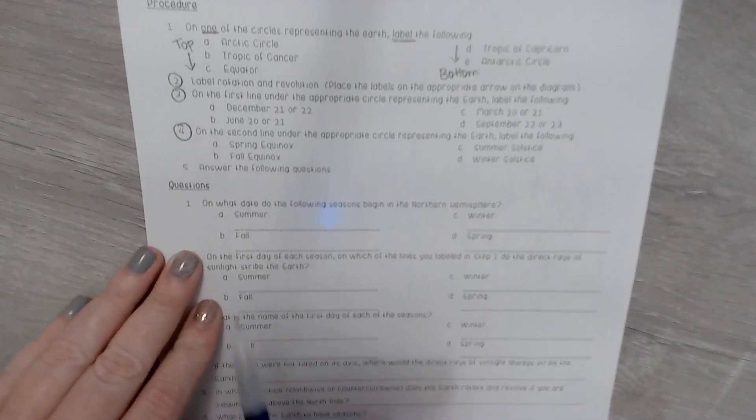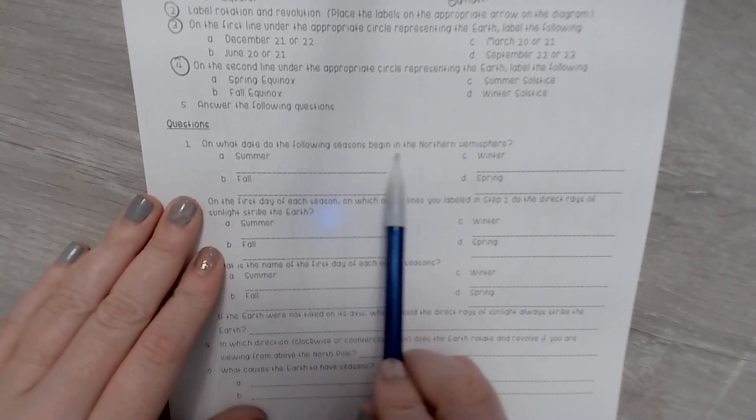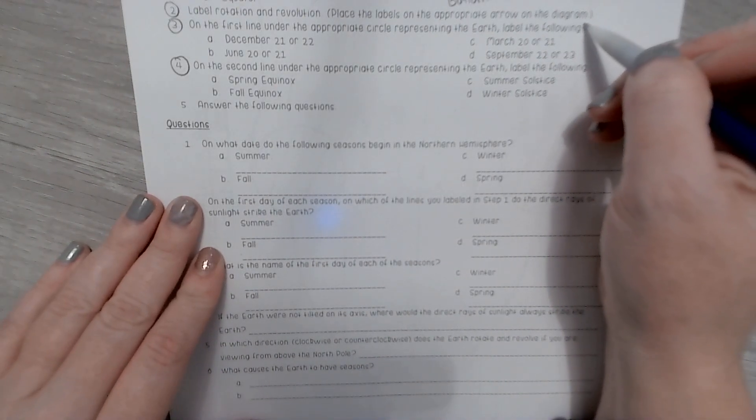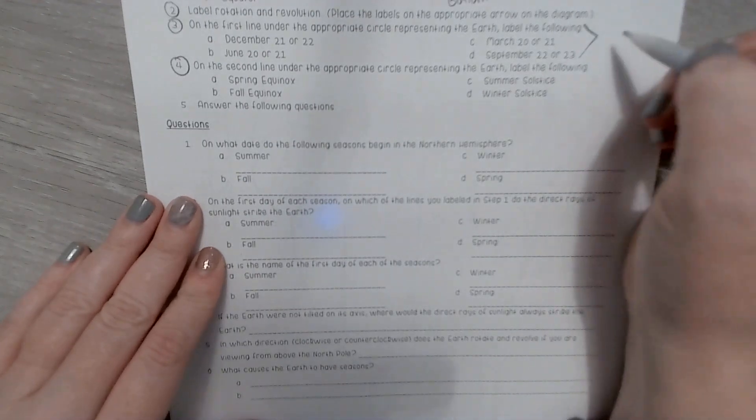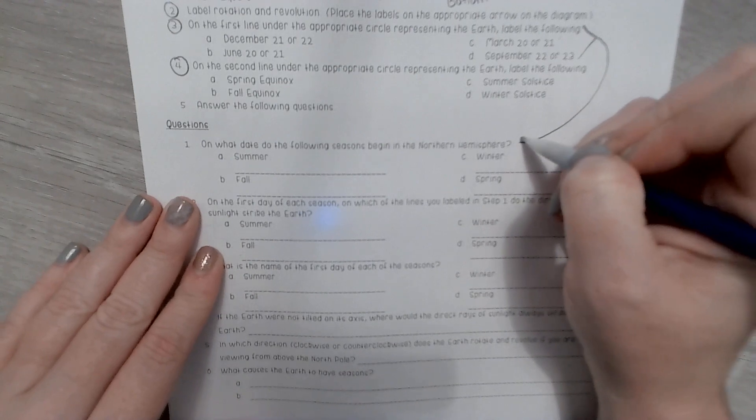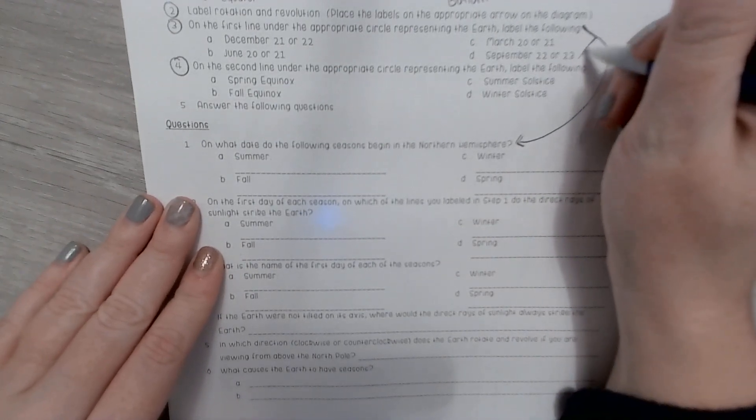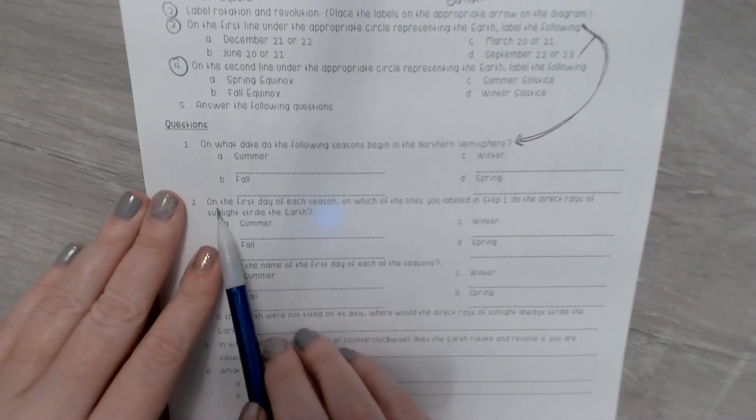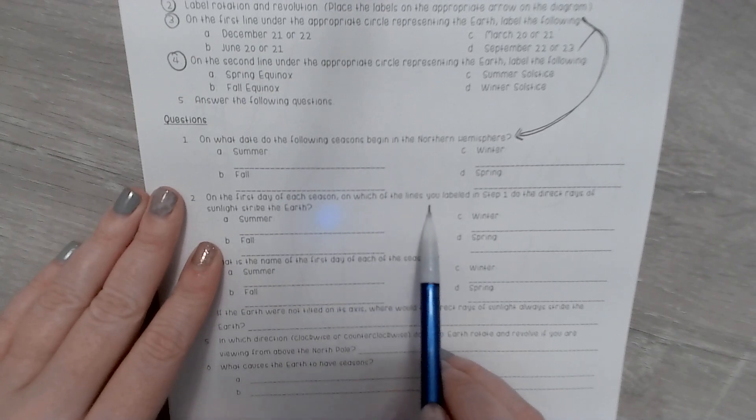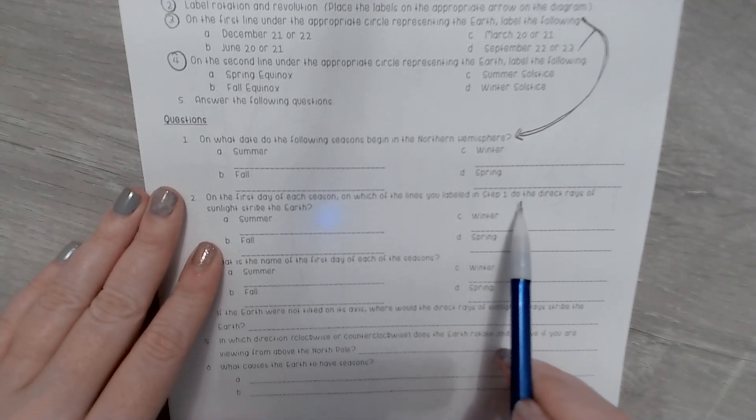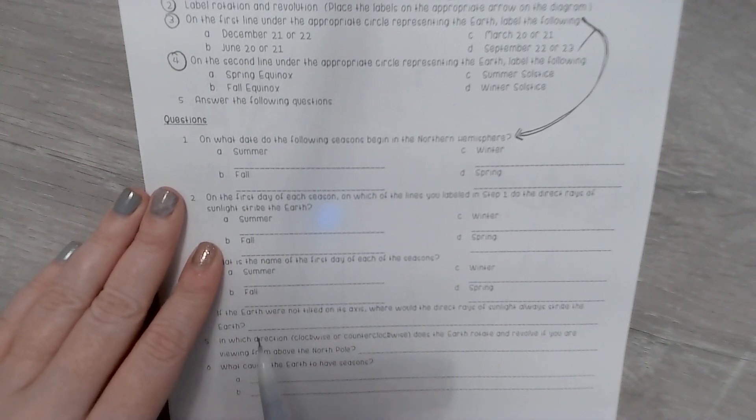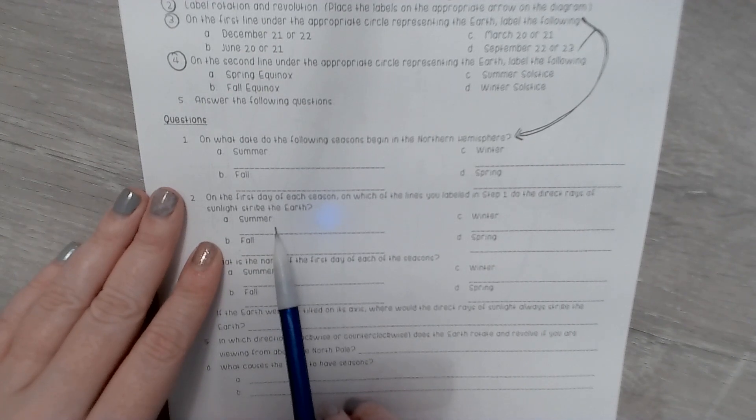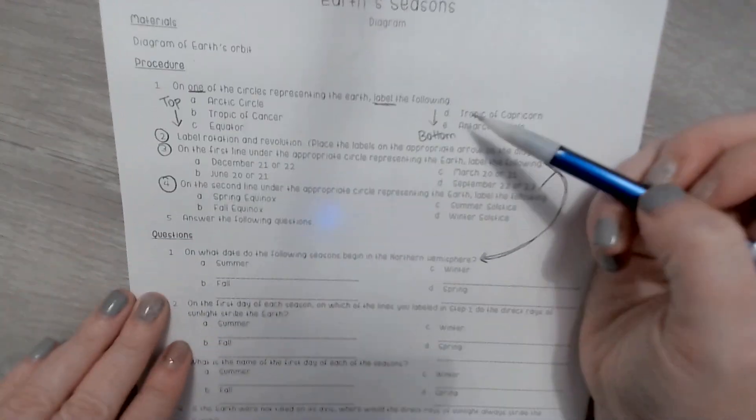Then answer the following questions. What date did the following seasons begin in the northern hemisphere? You are going to use these dates from question number three to fill out question number one. On the first day of each season, on which of the lines you labeled in step one do the direct rays of sunlight strike the Earth? So what you are also going to put here is from step number one.